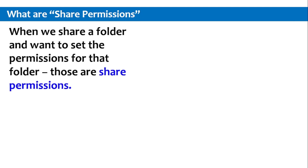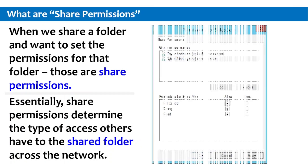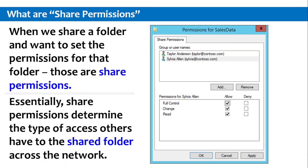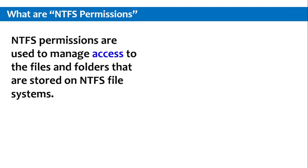When we share a folder and want to set a permission for that folder, those are share permissions. Share permissions determine the type of access others have to the shared folder across the network. The share permissions we have are: Full, Change, and Read.